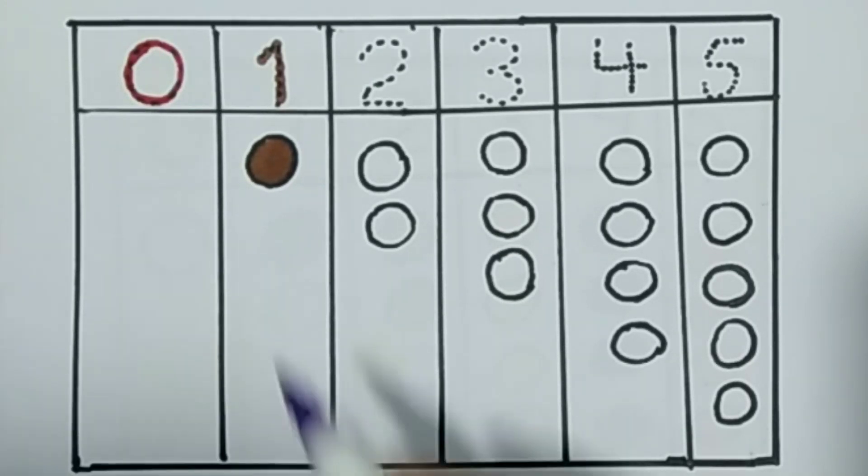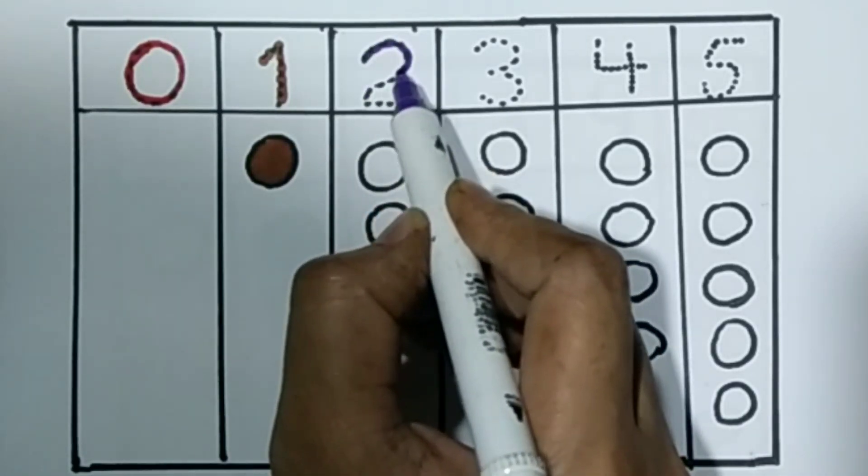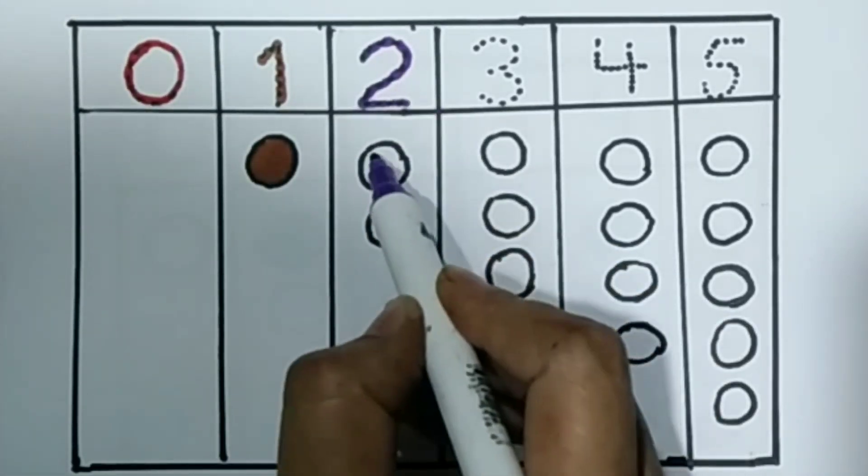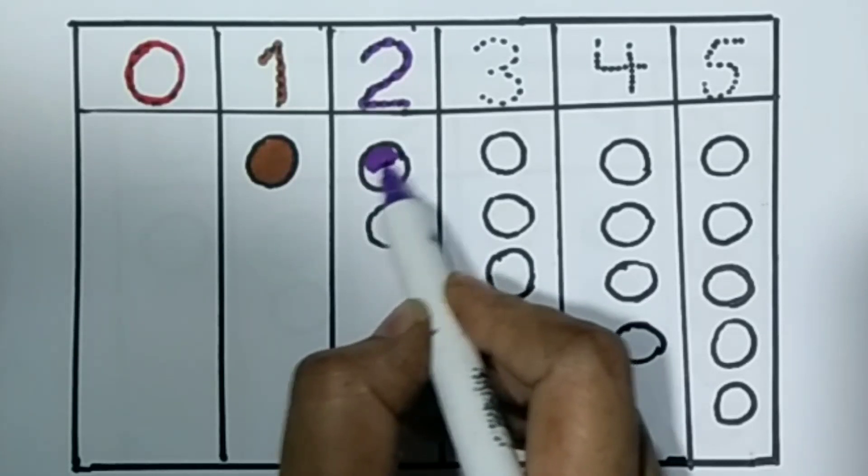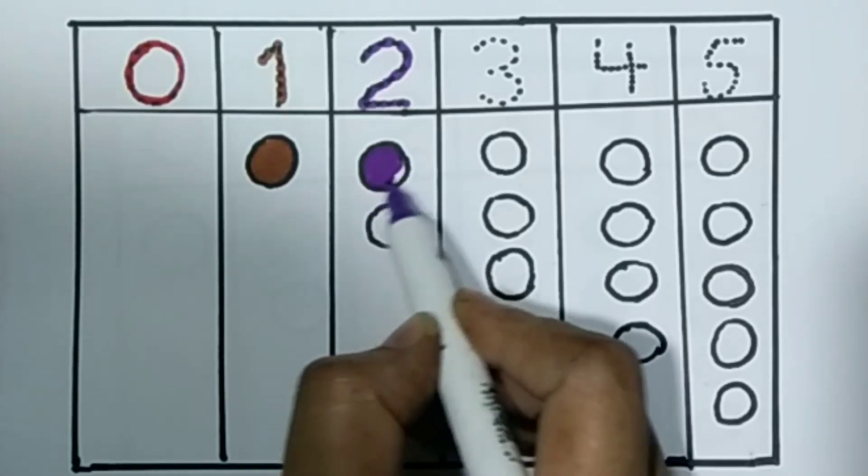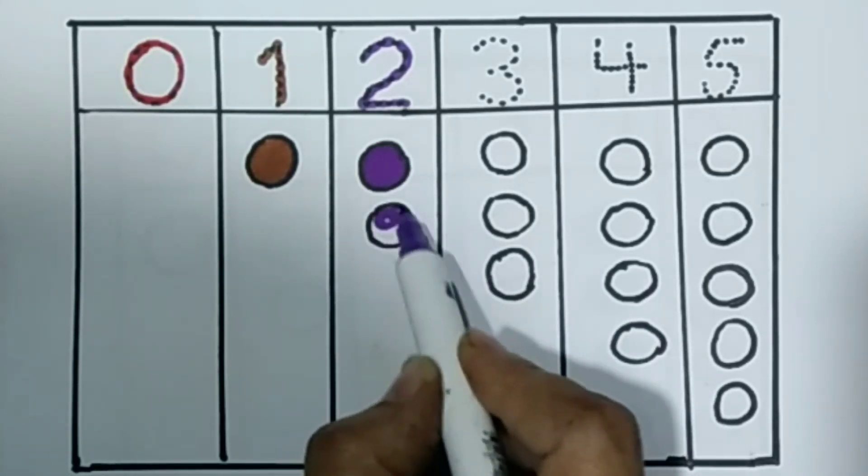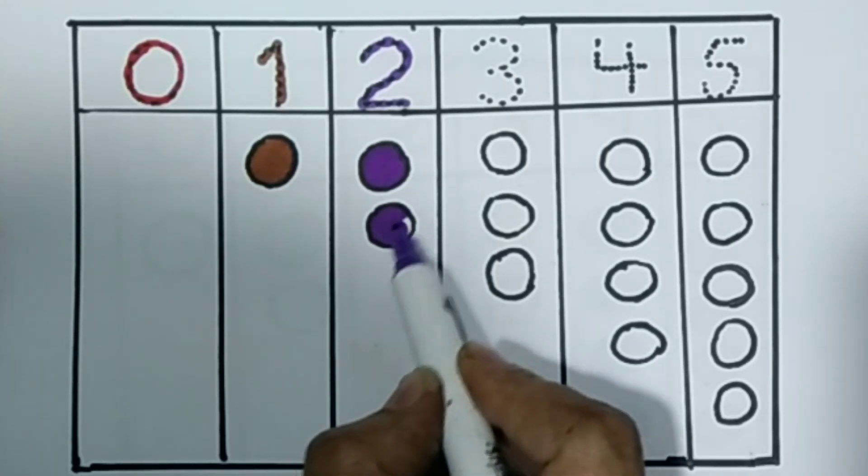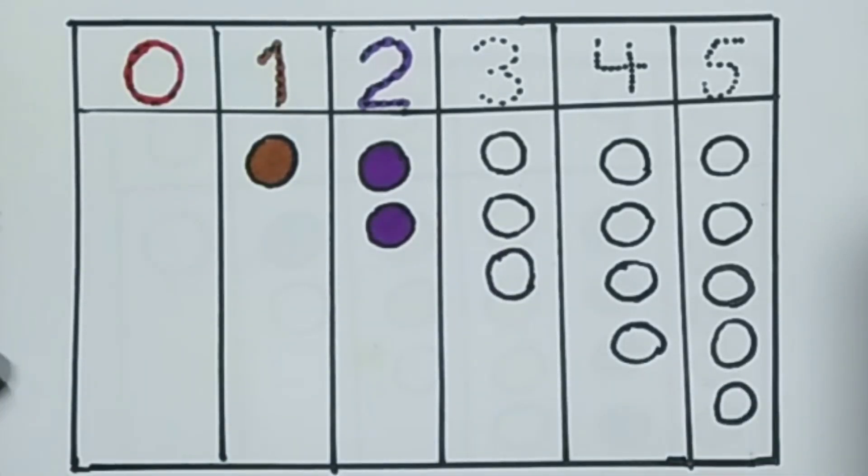And after number 1, we draw number 2. Purple color. And color the circle 2. Circle 1. And circle 2. Two circles. Circle 1. Circle 2.